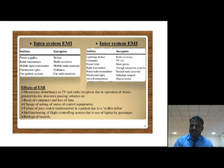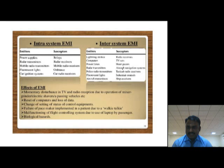Some examples are given here. For intra-system EMI: power supplies, radiation, radar emitters, and mobile radio transmissions. For inter-system EMI: computers, power lines, and radar transmissions. These are some examples for intra-system and inter-system EMI, and the effects of EMI are listed here.